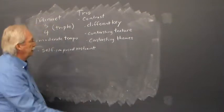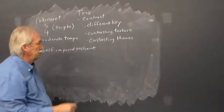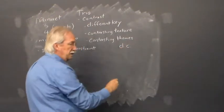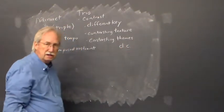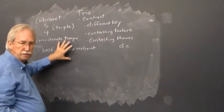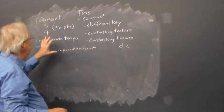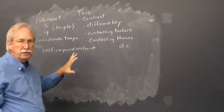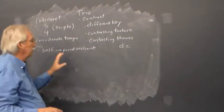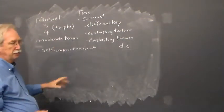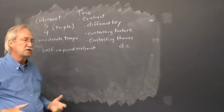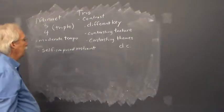This idea of minuet and trio means that at the end of the trio section, you expect to see a da capo indicated, which meant to go back and replay the minuet. The performance practice is that on that da capo, to not take the repeats, so it would be played without repeat. Overall it's an ABA with the B section being the trio section.